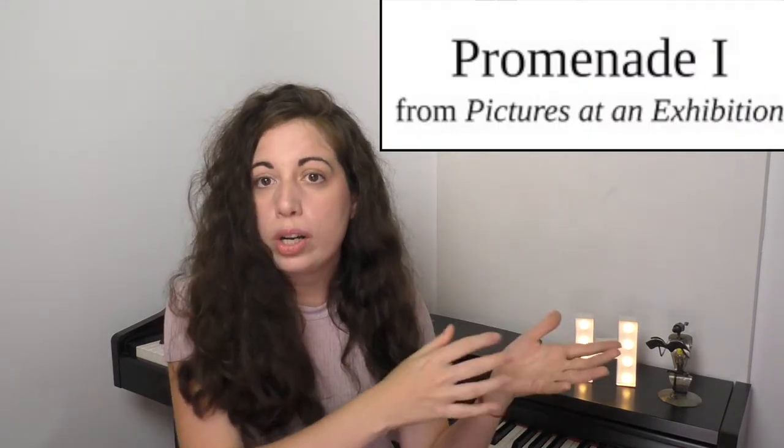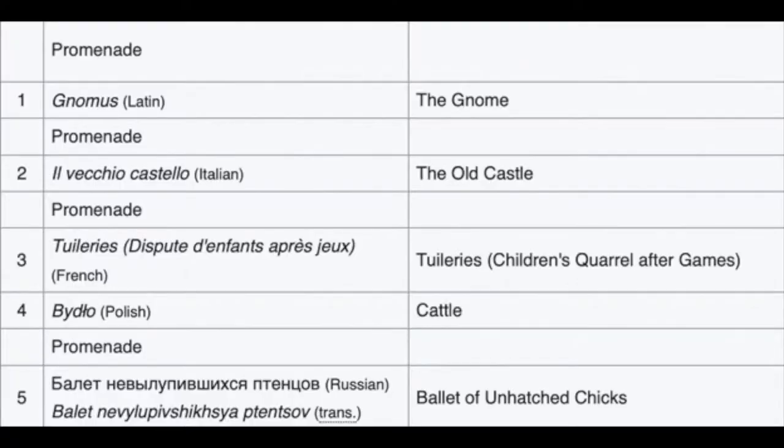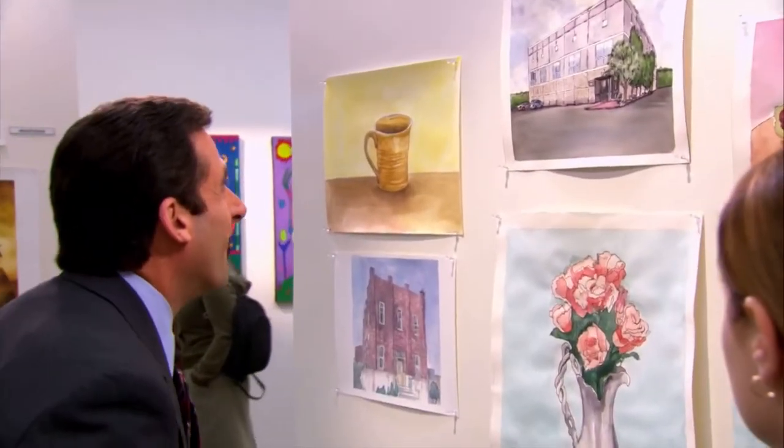What makes this piece so cool is that as you listen to it, you can really imagine Mussorgsky walking around looking at Hartmann's paintings. He accomplishes this by composing two different types of numbers: ones called 'Promenade,' meaning stroll or walk, and others named after the paintings he is looking at. He alternates — one promenade, one painting, and so forth. The promenade theme repeats but sounds slightly different each time, reflecting the mood left by the painting before.